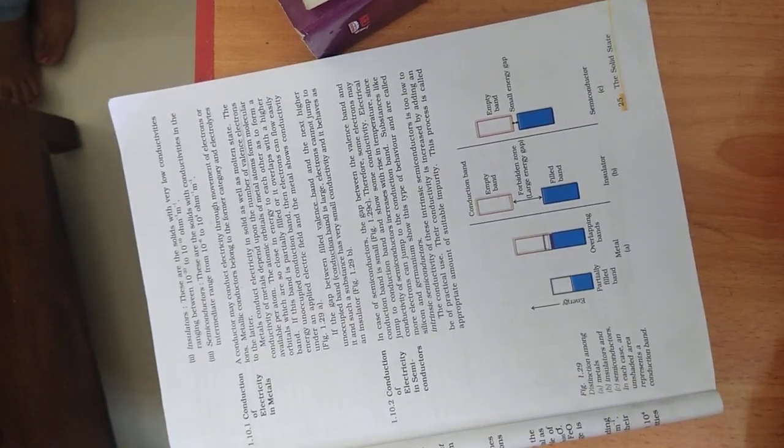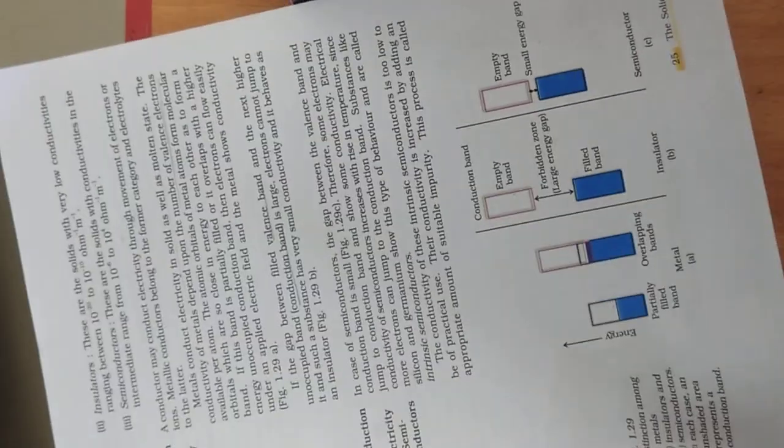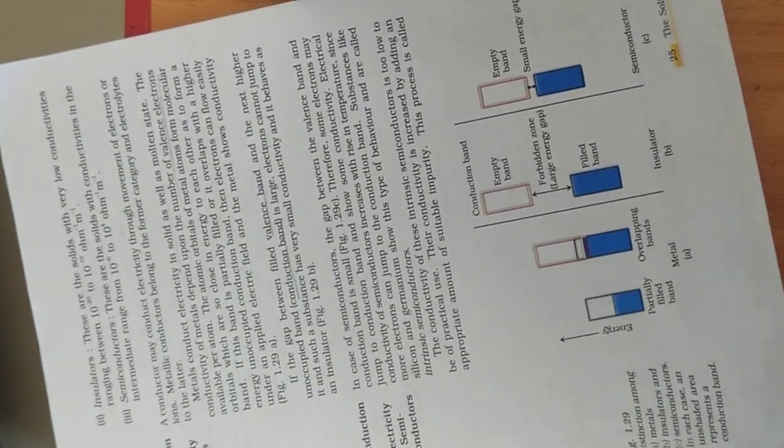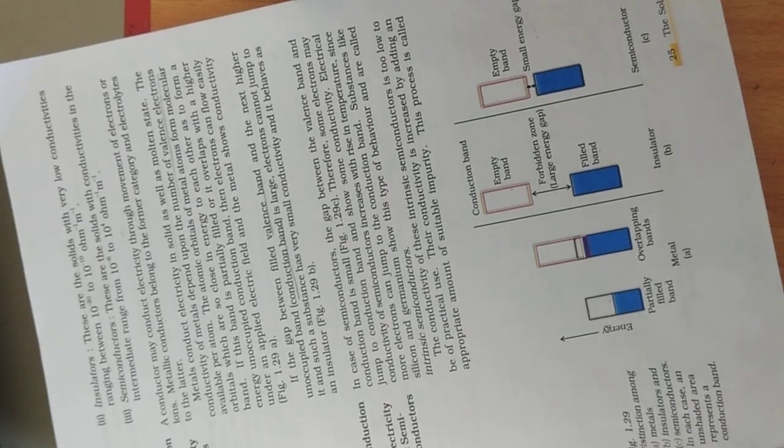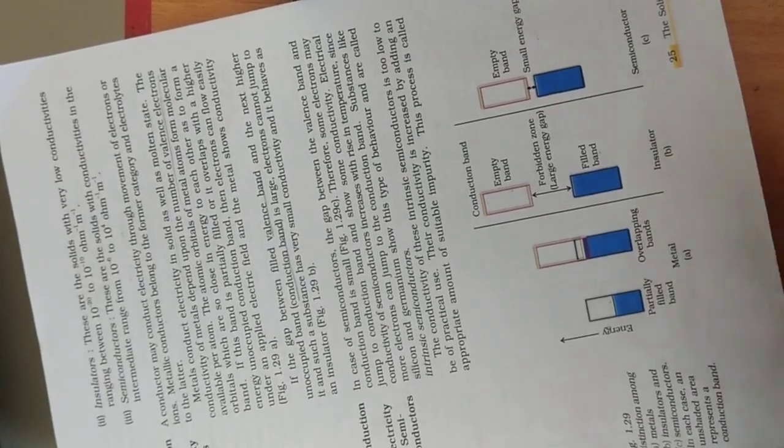In their pure form, semiconductors are called intrinsic semiconductors. Intrinsic semiconductors have low conductivity. To increase conductivity, we add a suitable amount of impurities. This process is called doping.